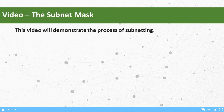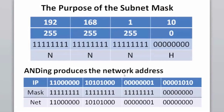Subnetting makes sense from the binary perspective. When we take the IP address and the subnet mask and convert them to binary — the IP address on one row and the subnet mask on another — the computer and the router are able to logically AND or combine the IP address and the subnet mask to find the network address.